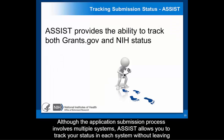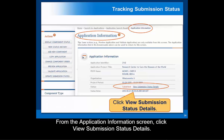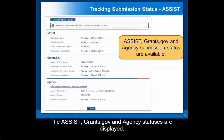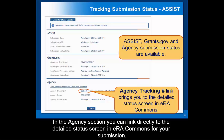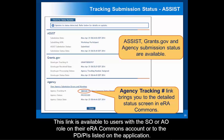Although the application submission process involves multiple systems, ASSIST allows you to track your status in each system without leaving ASSIST. From the Application Information screen, click View Submission Status Details. The ASSIST, Grants.gov, and Agency statuses are displayed. In the Agency section, you can link directly to the Detailed Status screen in eRA Commons for your submission. This link is available to users with the SO or AO role on their eRA Commons account or to the PDPIs listed on the application.